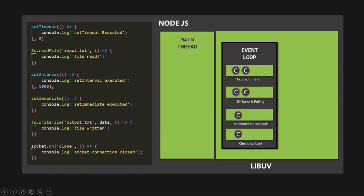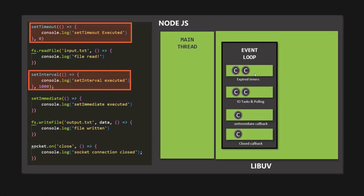In this first phase, the callbacks attached to timers like setTimeout or setInterval are stored. Whenever these timers expire, the callback functions attached to them are pushed to the callback queue of this first phase, where they wait for execution. As soon as the main thread is empty, the callback functions from this first phase are pushed to the main thread and executed. This means the callback functions related to timers are the first to be executed in the event loop, if there are any.